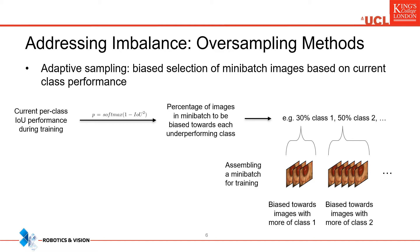We focused on two different approaches. The first is adaptive sampling, where per-class performance measured in the IOU metric is tracked throughout training. The current relative performance of classes is then linked to the number of mini-batch images biased towards each class. In other words, the lower a class's IOU value, the more images in the next training mini-batch will be biased towards selecting a frame containing more of that class label. This bias is achieved by randomly selecting 10 frames from the dataset and only keeping the one with the highest number of pixels labeled with the class of interest.